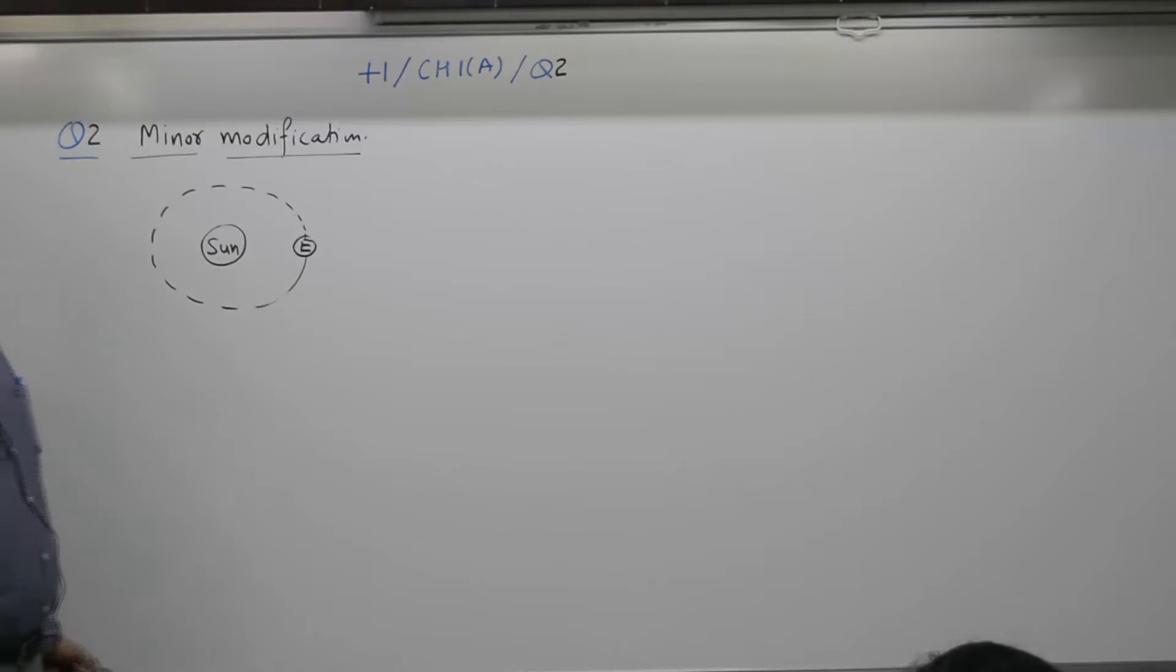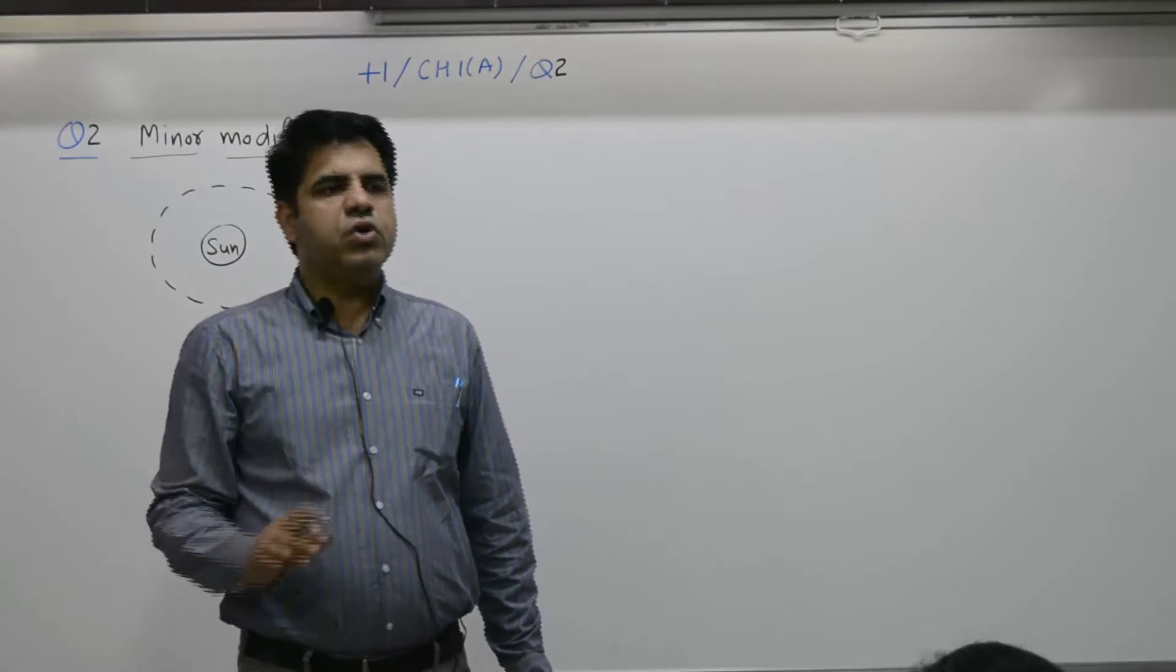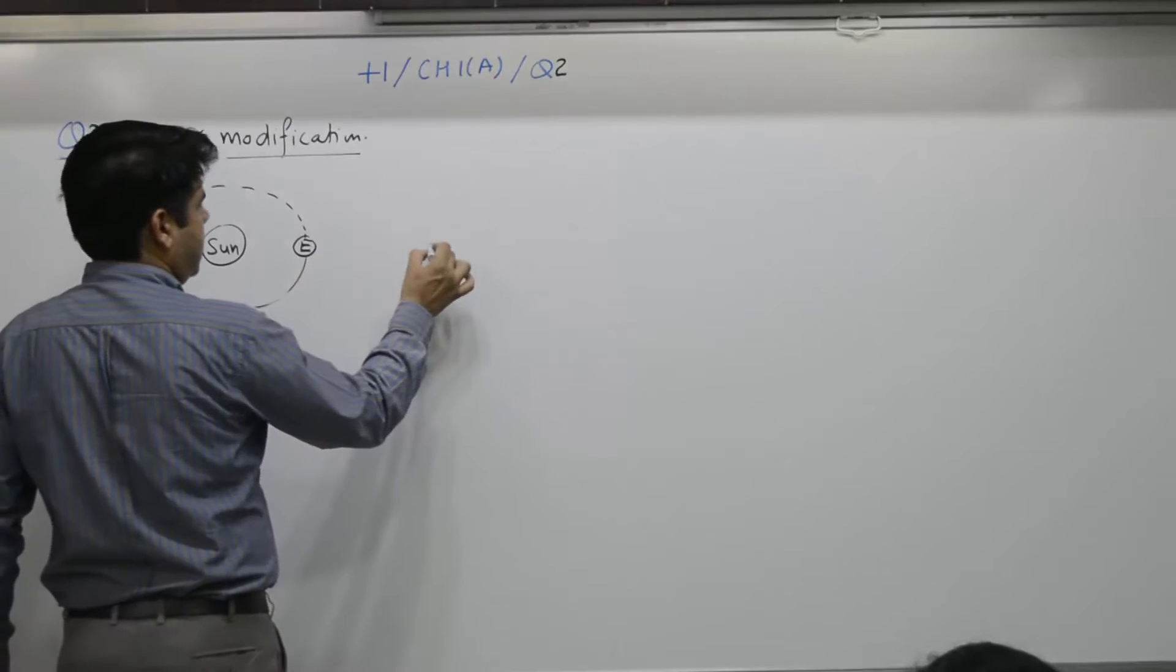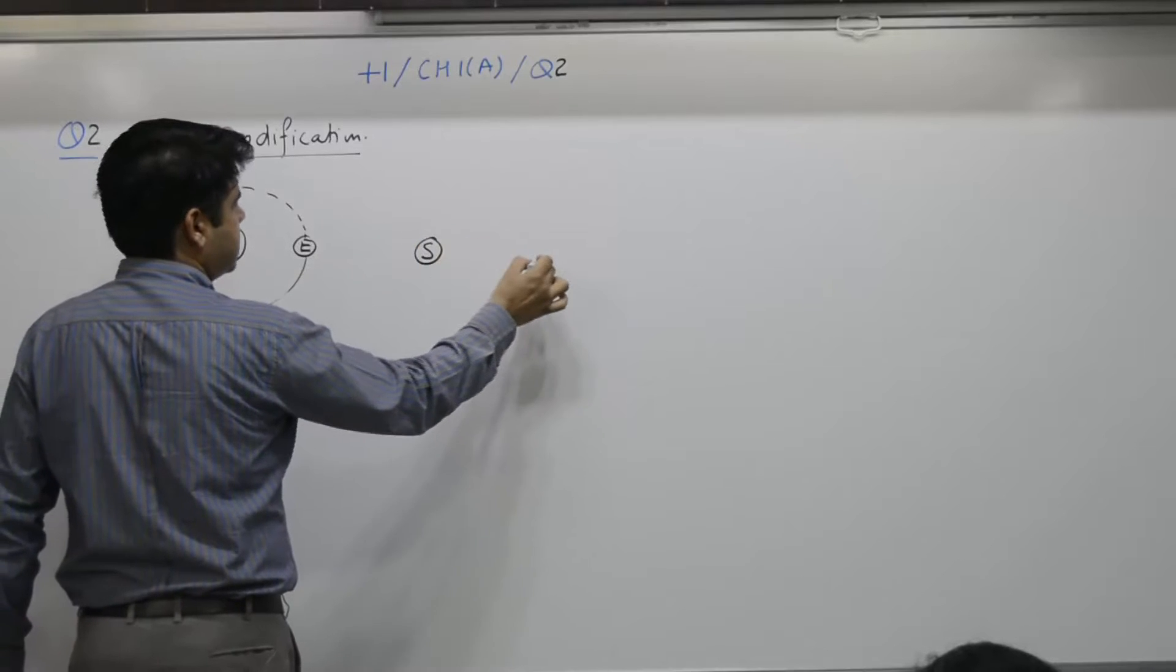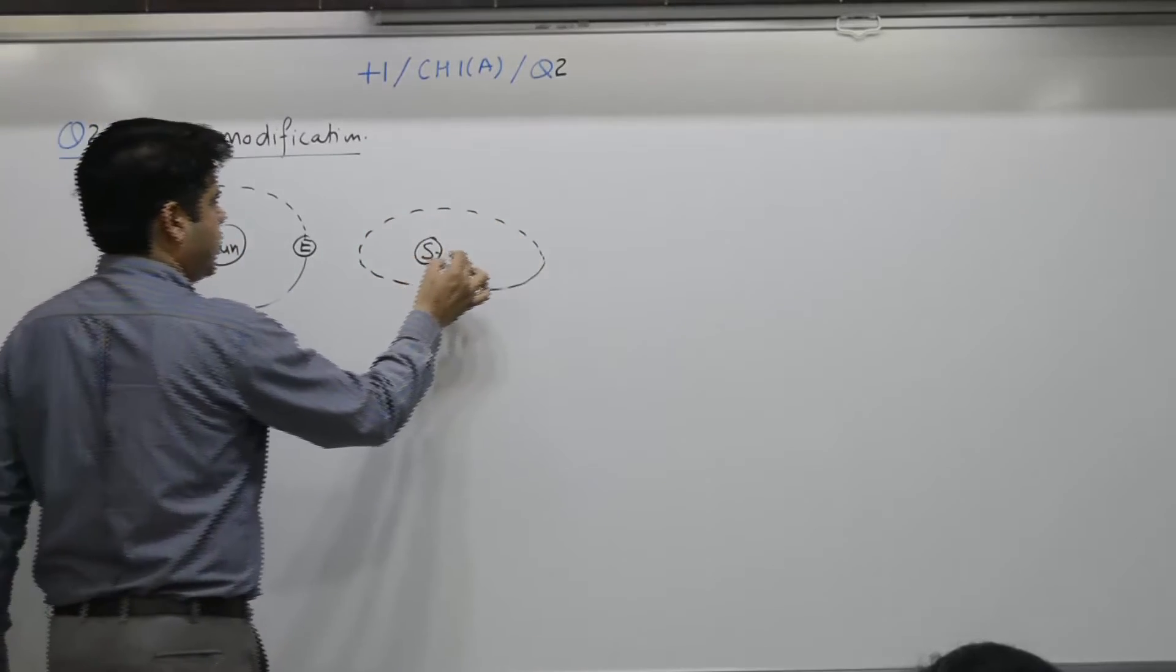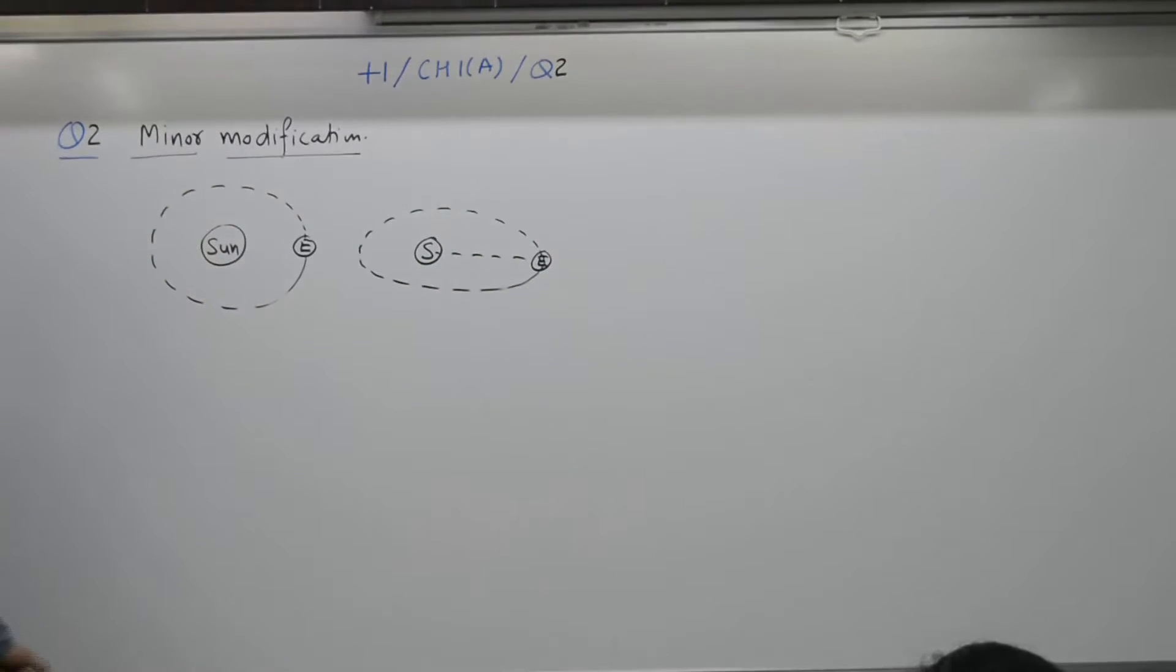Planets move around sun in elliptical orbits. Kepler's law to be studied in detail in chapter number six. But as of today, the theory is it is an ellipse. Earth moves around sun in elliptical orbit. So it is a minor modification.